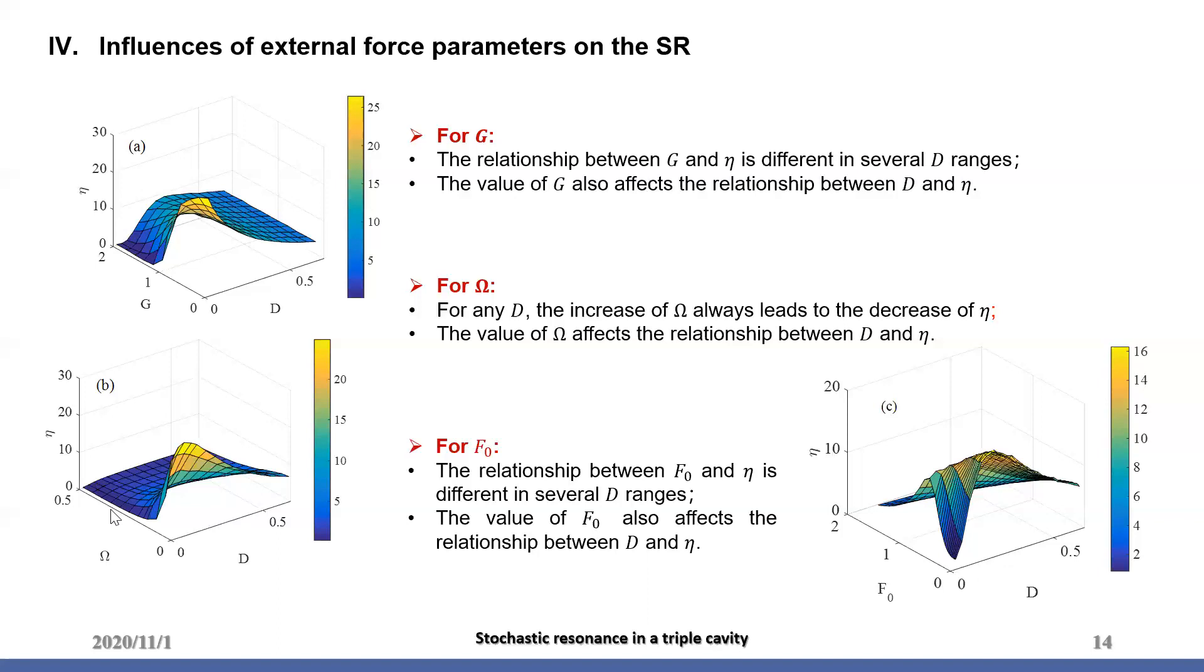Figure C is for F0. First, the relations of F0 and eta depend on D. For smaller d, eta-F0 curve has a maximum. For larger d, an increase of F0 leads to a decreasing eta. In addition, F0 also affects the relation of D and eta. For a certain range, the smaller F0 is, the more obvious is SR. Otherwise, F0 will destroy SR.